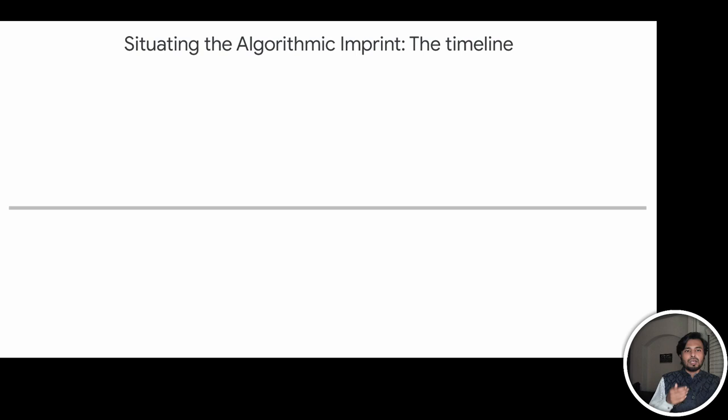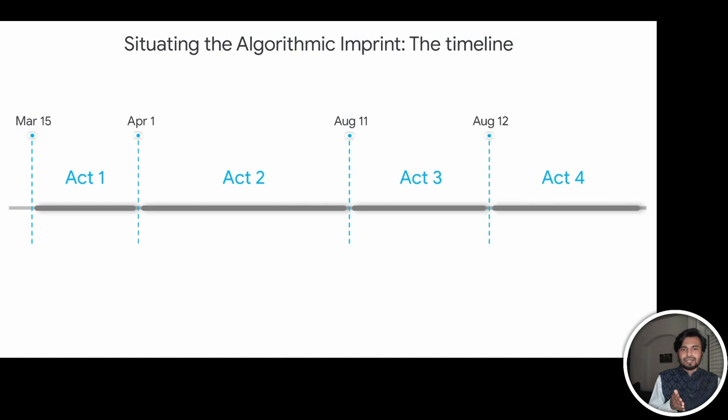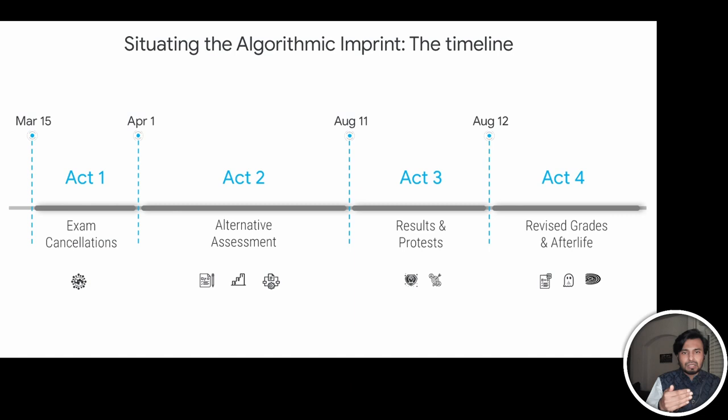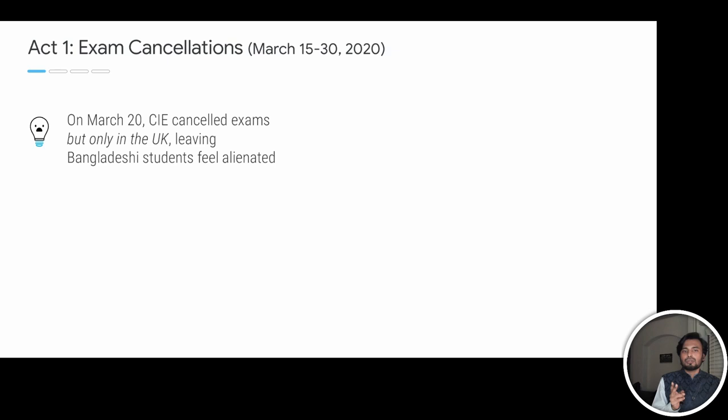To help with chronicling the events, which span a period of five months from March to August of 2020, we have split the timeline into four acts, covering different events — from exam cancellations to alternative assessments, the results, the protests, and the revision of the grades. As I chronicle each act, I'll share its relevance to the imprint.